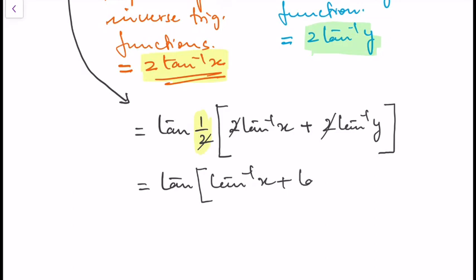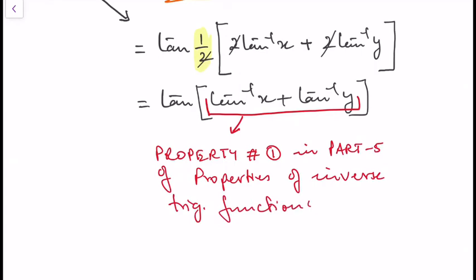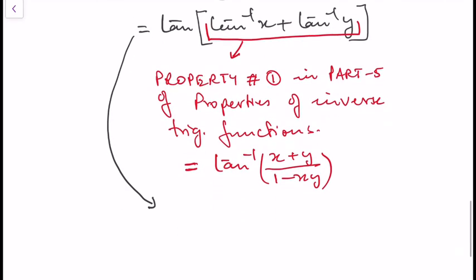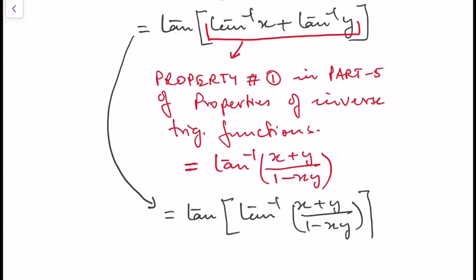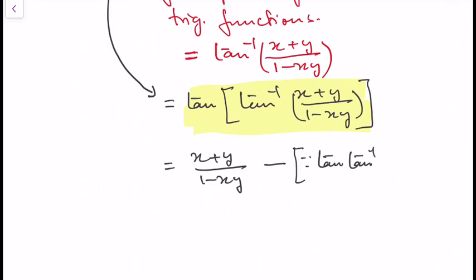This uses property number 1 from part 5 of our video on properties of inverse trigonometric functions: tan⁻¹(x) + tan⁻¹(y) = tan⁻¹((x+y)/(1−xy)). Substituting this value, we get tan(tan⁻¹((x+y)/(1−xy))). Since tan(tan⁻¹θ) = θ, this equals (x+y)/(1−xy).